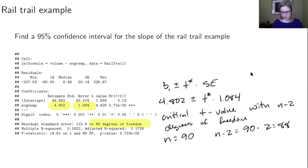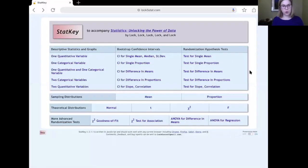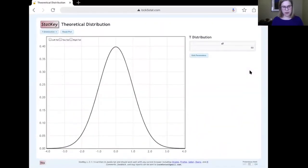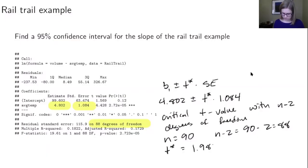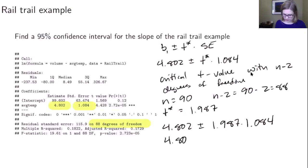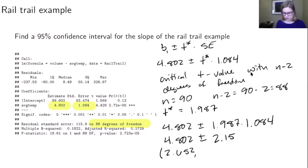To find the critical value, we go to StatKey, then Theoretical Distributions, t-distribution, and enter 88 for degrees of freedom. Hitting the two-tail button gives a critical value of 1.987. So we have 4.802 plus or minus 1.987 times 1.084, which equals 4.802 plus or minus 2.15. That gives a lower bound of 4.802 minus 2.15 equals 2.652, and an upper bound of 4.802 plus 2.15 equals 6.952.